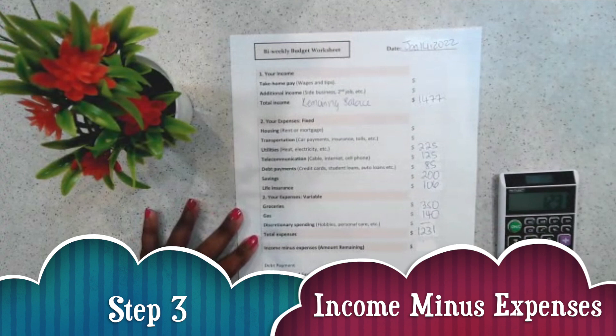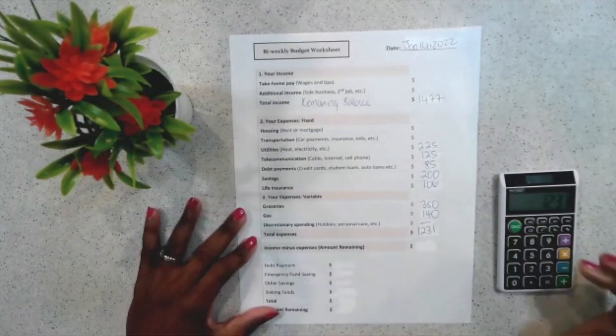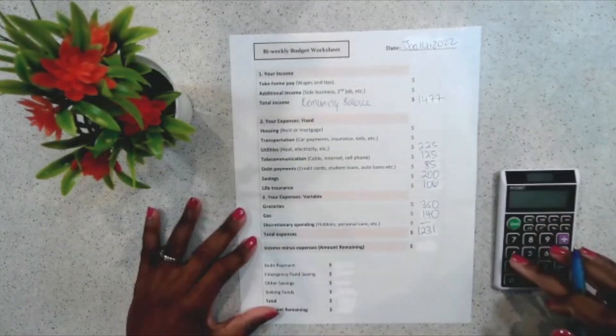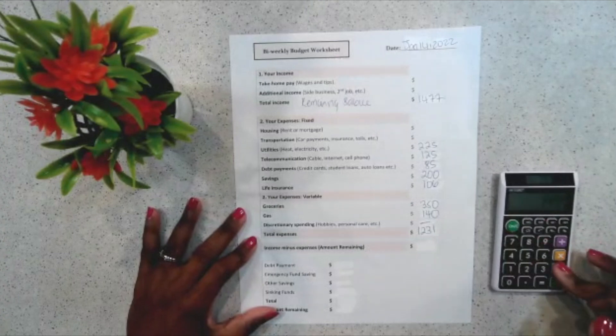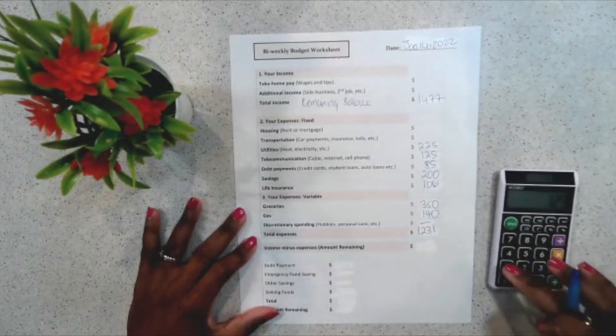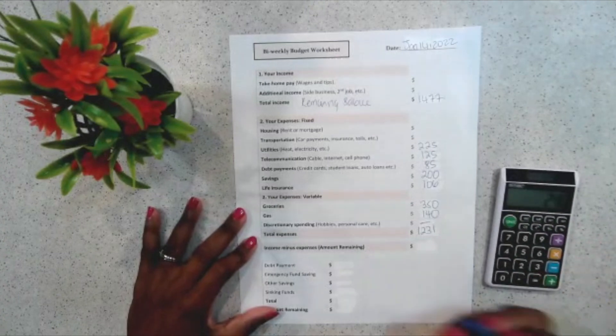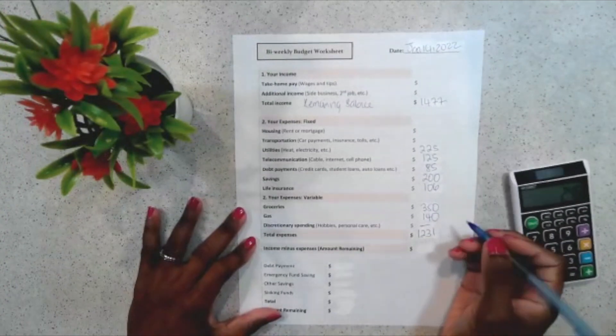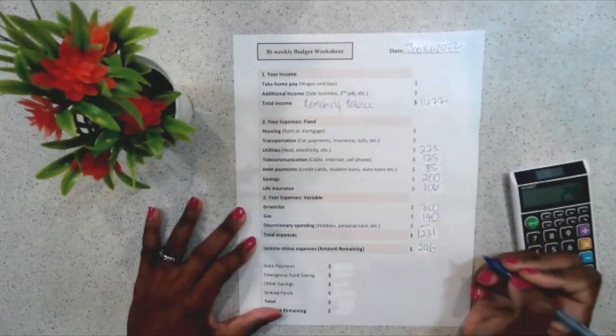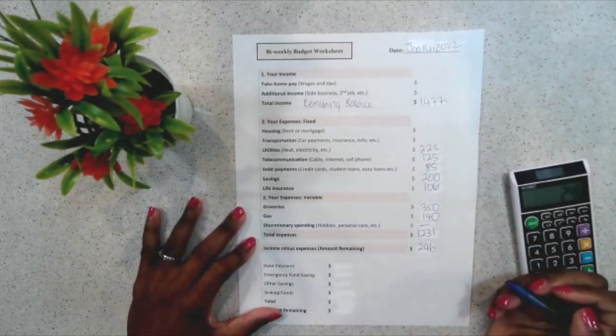So, that would be $1,477 minus $1,231. So, the balance is going to be $246. So, that's the balance that I have remaining.